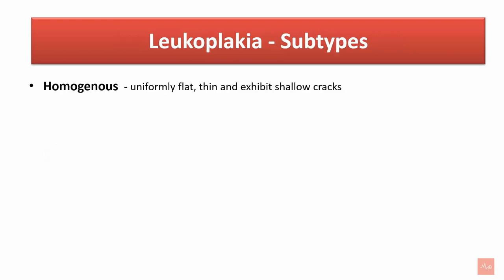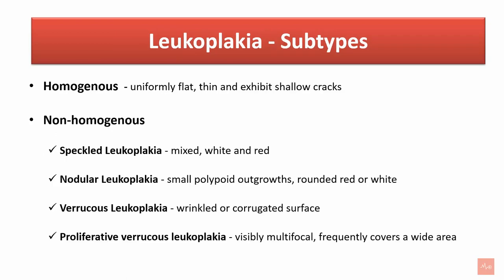Clinical subtypes of leukoplakia are homogenous and non-homogenous. Homogenous lesions appear uniformly flat and thin and exhibit shallow cracks. Under non-homogenous, we have speckled leukoplakia, which is a mixed red and white lesion; nodular leukoplakia, which shows small polypoid outgrowths that may be rounded and red or white; verrucous leukoplakia, which shows a wrinkled or corrugated surface; and proliferative verrucous leukoplakia, which is visibly multifocal and frequently covers a wider area.